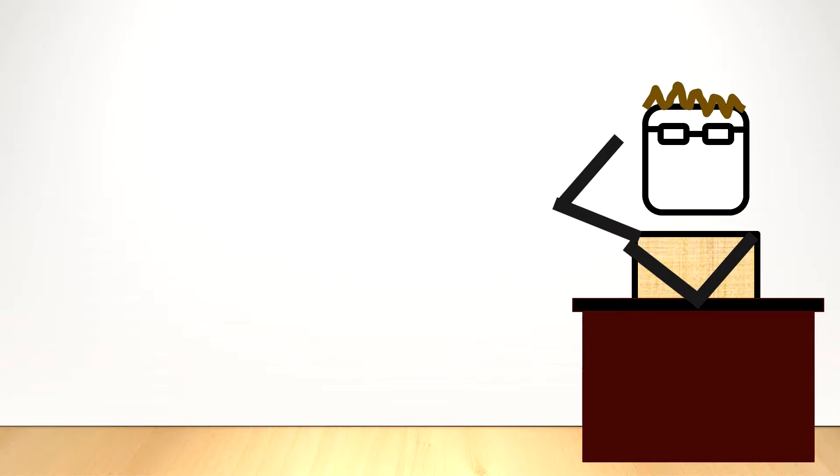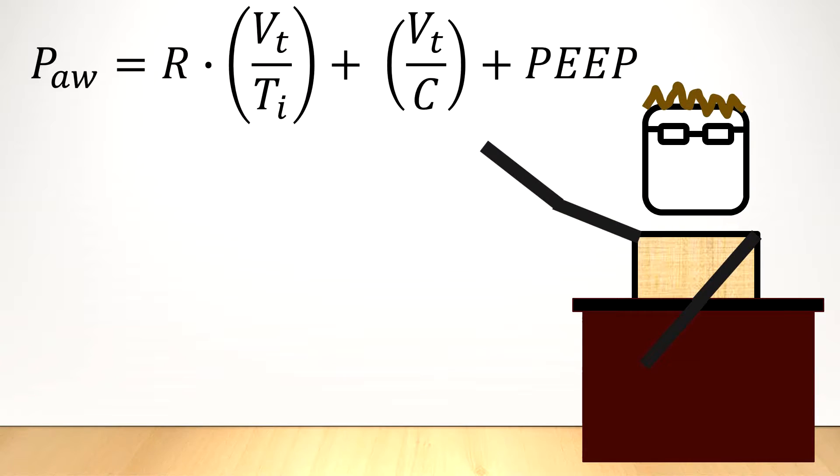As we've seen in the equation of motion, the airway pressure is composed of three parts: the peep, the airway component, and the lung component. So in order to understand what the pressure in the lungs is, you have to use the equation of motion.